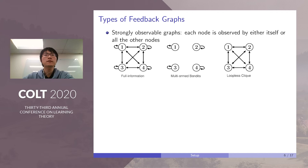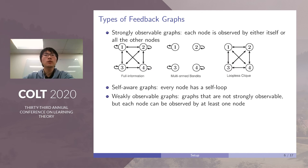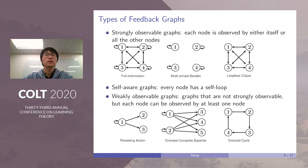There is a special kind of strongly observable graphs called self-aware graphs. It is a graph where each node has a self-loop. Again, MAB is a special case of self-aware graphs. A weakly observable graph is a graph which is not strongly observable, but each node can be observed by at least one node. These are several examples. The first one is called revealing action graph, where only one node has feedback, but it can observe all the nodes. The second one is called complete bipartite graphs, where none of the nodes without self-loops has feedback, but each node with a self-loop can observe all the nodes without self-loops. And the third one is called a directed cycle, where each node can only observe its next node.